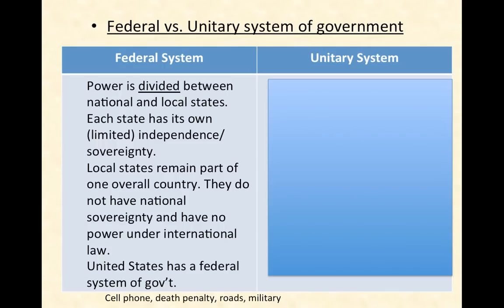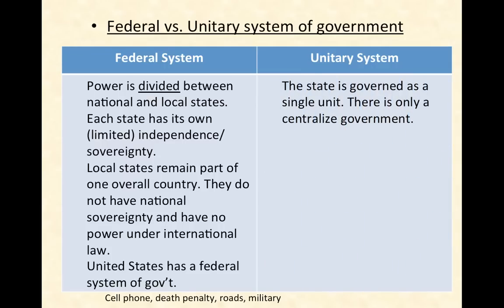The United States has a federal system of government. Other countries have a unitary system, which means that the state or country is governed as a single unit with only one centralized government. So even if a country has smaller states within it, there's only one government maintaining control and having power over all of those states.